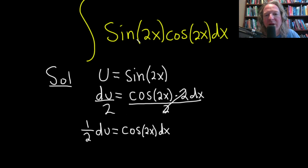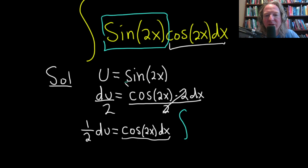Really nice. So cosine 2x dx is right here. Let's make our substitution. I think I can actually just squeeze it in right here. So the integral, we have sine of 2x. So this whole thing is u.